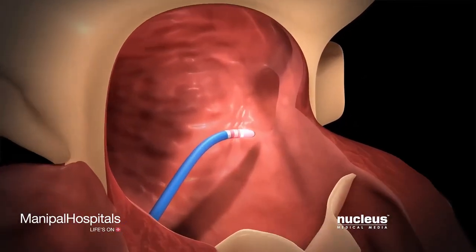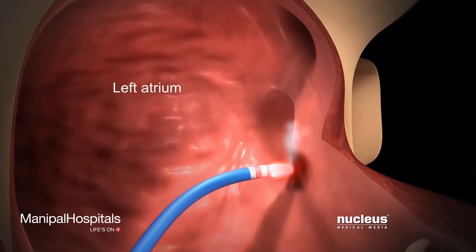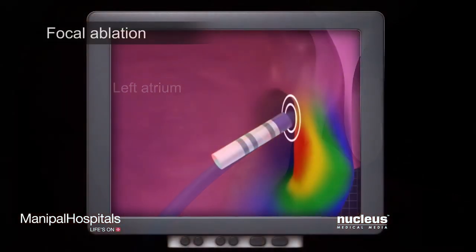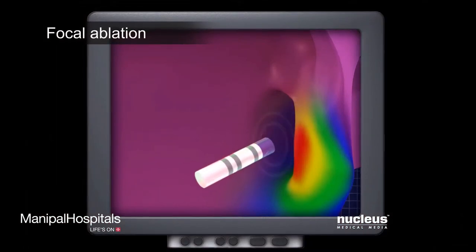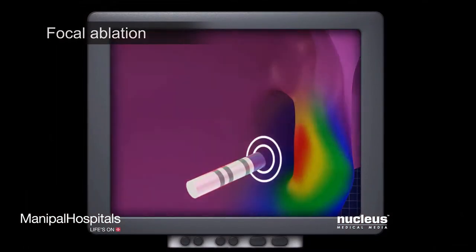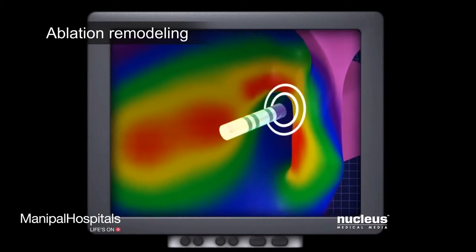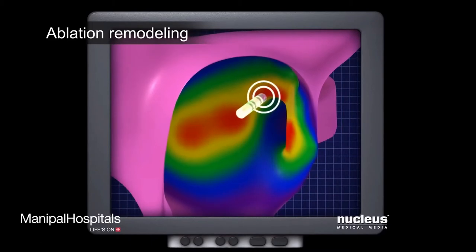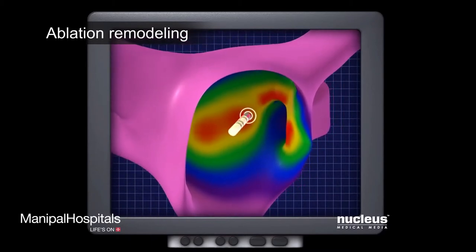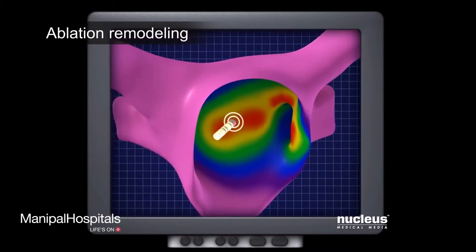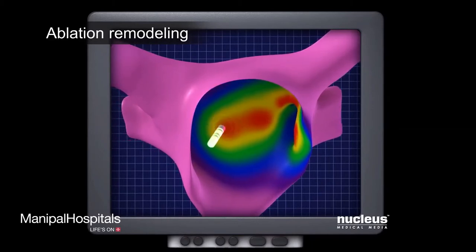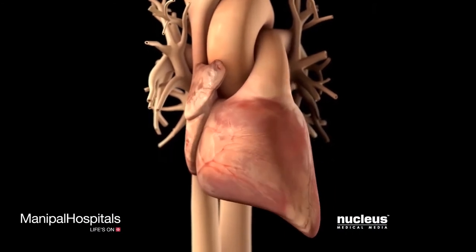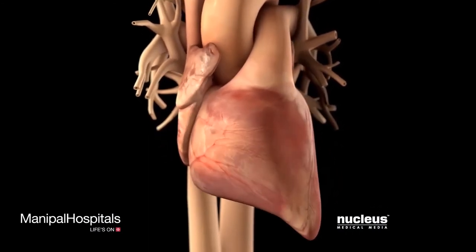For an atrial arrhythmia, a doctor will ablate the atrial tissue causing it. If the affected tissues are small, well-defined areas, the procedure is called focal ablation. Or, if the affected tissues are larger areas with more complex rhythm disturbances, the doctor may perform a procedure called ablation remodeling. Both types of ablation restore normal electrical impulses and prevent an arrhythmia from happening.